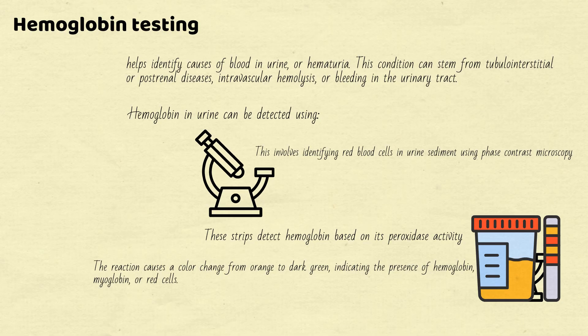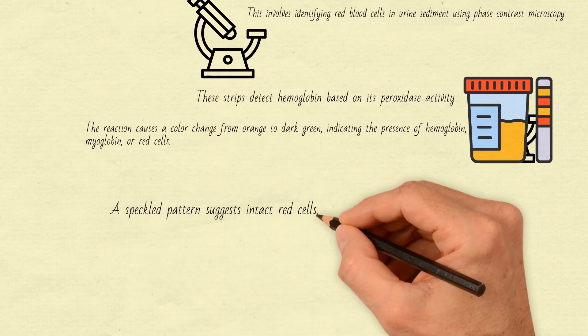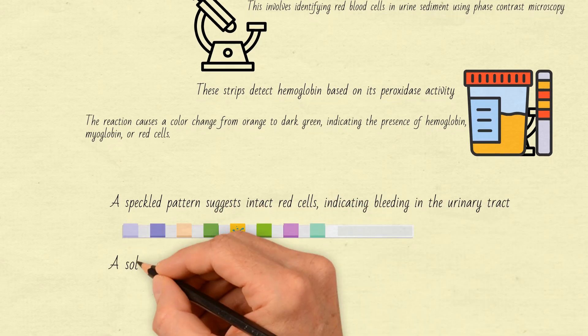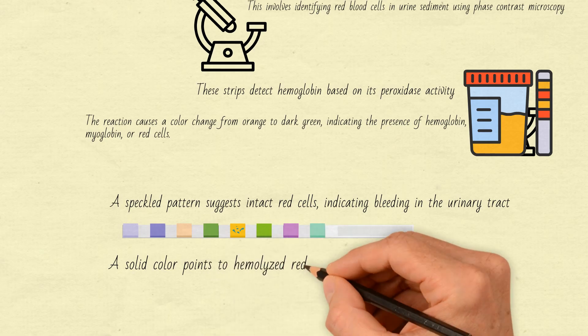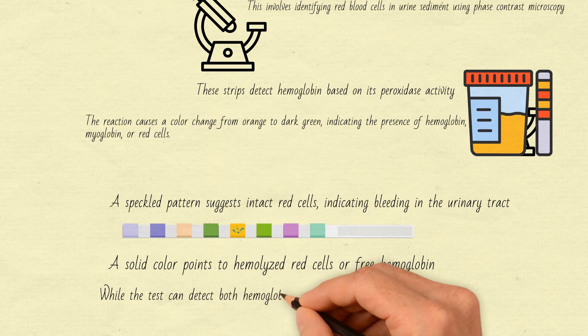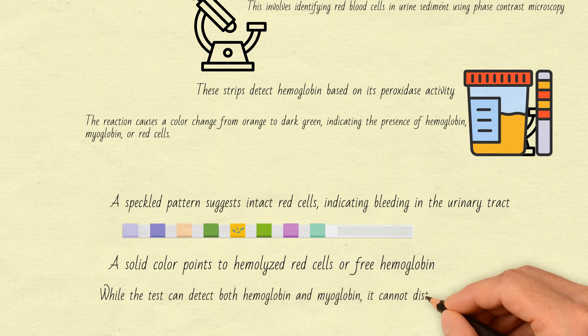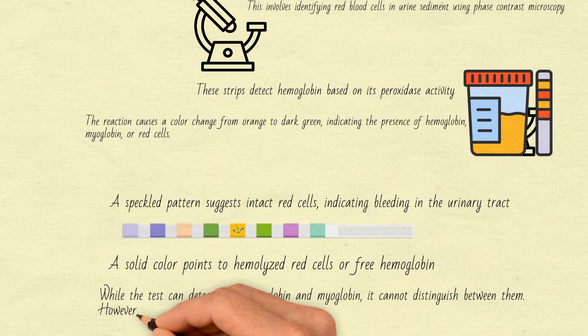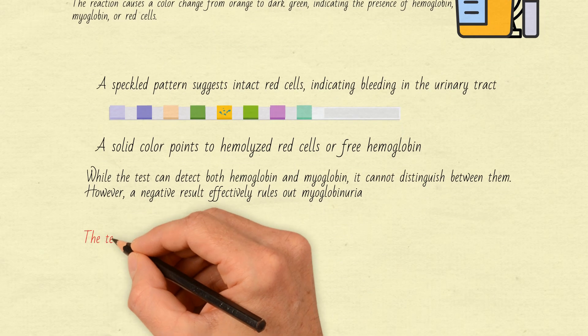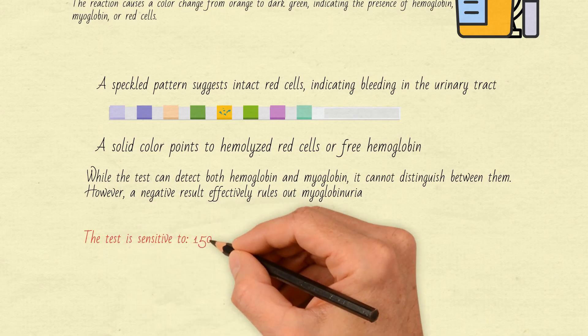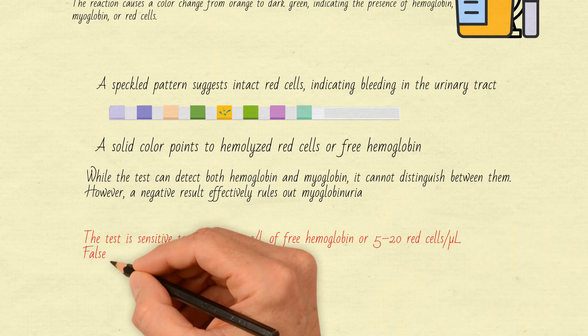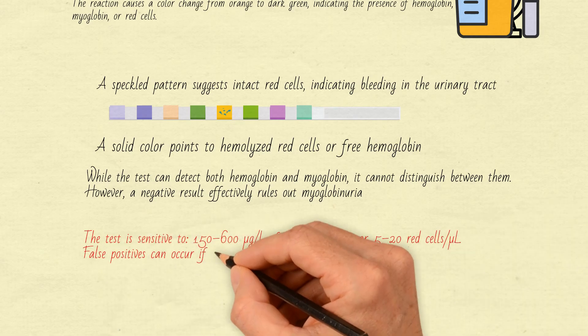Interpreting reagent strip results is straightforward. A speckled pattern suggests intact red cells, indicating bleeding in the urinary tract. A solid color points to hemolyzed red cells or free hemoglobin. While the test can detect both hemoglobin and myoglobin, it cannot distinguish between them. However, a negative result effectively rules out myoglobinuria. The test is sensitive to 150-600 micrograms per liter of free hemoglobin or 5-20 red cells per microliter.